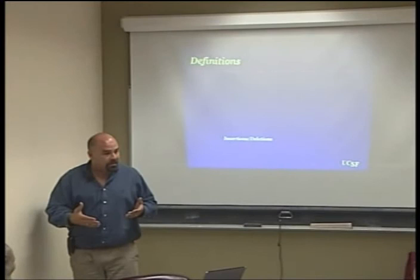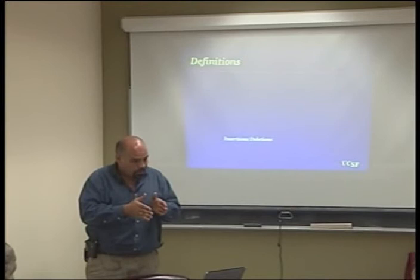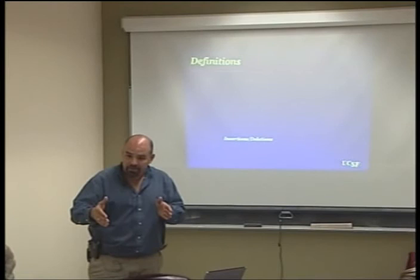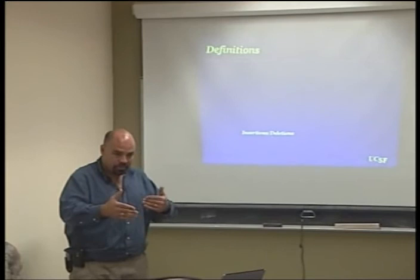When we talk about haplotypes, haplotypes are simply sentences. If you can imagine a gene being a word, the combination of several words makes a sentence — that's what we call a haplotype. A whole sentence travels together, like 'See Joe run.' That would be considered a haplotype.